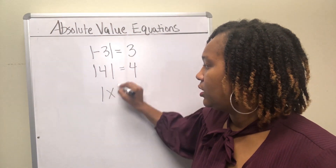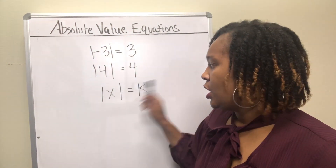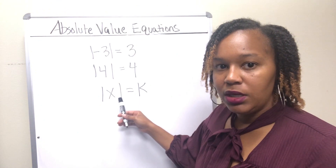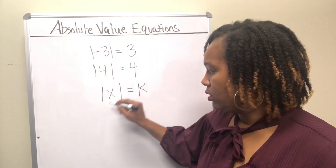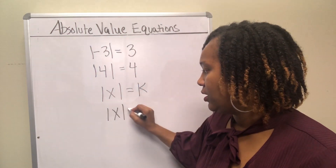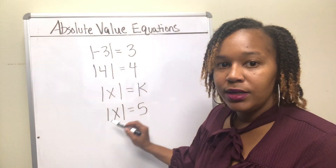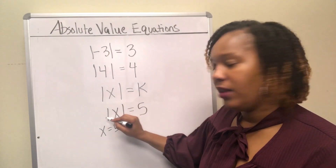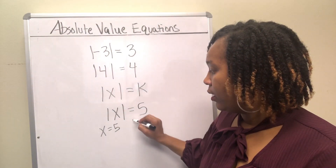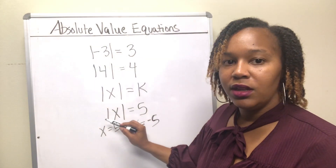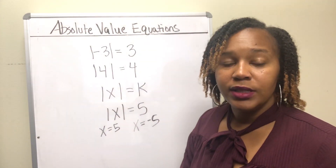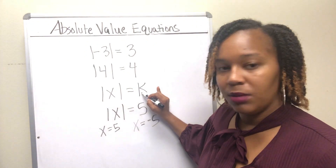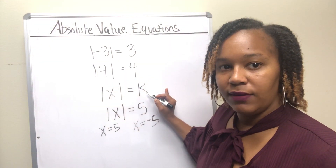An absolute value equation is an equation that has a variable and absolute value in it. If you have an absolute value equal to a number, you have to consider what x can be to equal that number. If the absolute value of x equals 5, x could be 5 — since the absolute value of 5 is 5 — or x could be negative 5, since the absolute value of negative 5 is also 5. So you take x and set it equal to k (positive) and also equal to negative k.